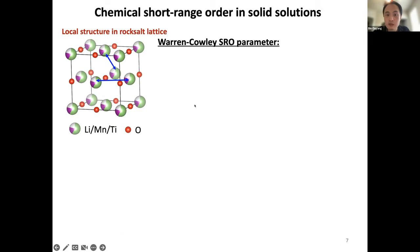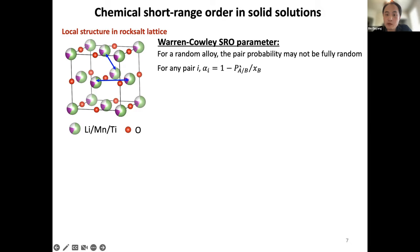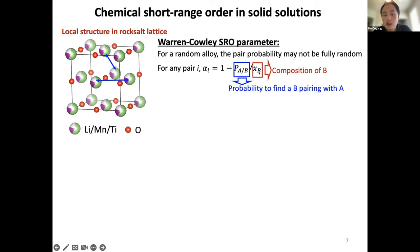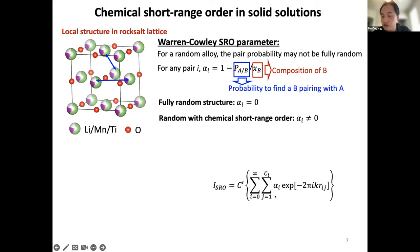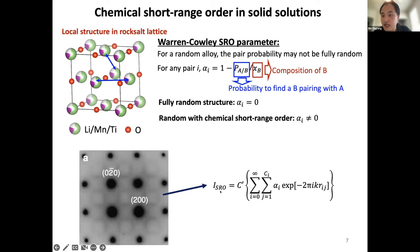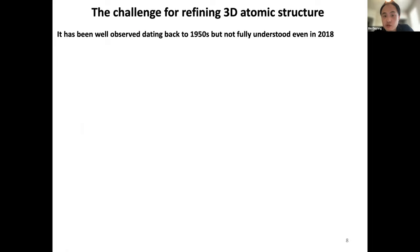Chemical short range order is essentially a measurement of the pairing probabilities of certain species in the random lattice. It can be calculated by computing the probability of finding species B paired with A divided by the concentration of B. If you get zero, it's the random limit; a non-zero value means you have chemical short range order. You can implement this into a Fourier transformation, and the intensity takes the Patterson function form — essentially the analytic form of the diffuse scattering features seen in experiments.